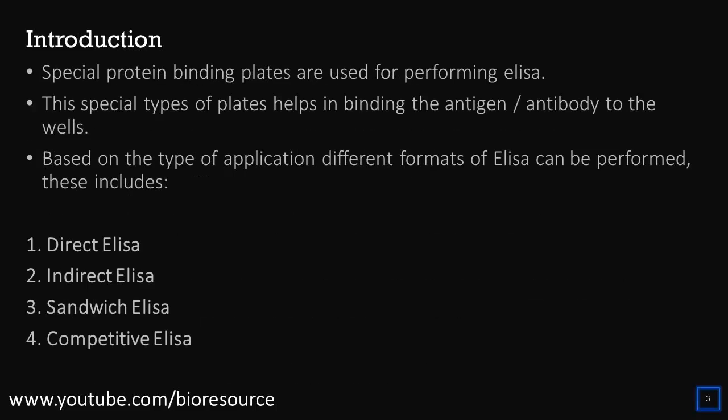For ELISA, special protein binding plates are used, such as the NUNC plates. These special types of plates help in the binding of antigen or antibody to the well surface.